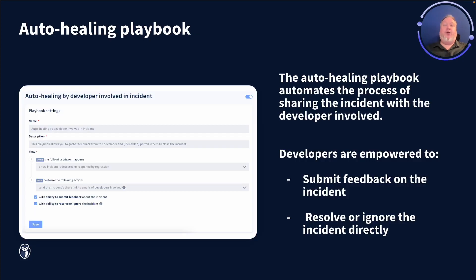The auto-healing playbook automates the process of sharing the incident with the developers involved. The developers are then empowered to submit their feedback — they're provided the correct links to review the incident, write their response, and include the nature of the secret involved and any other notes that can help close out the incident. The playbook also gives developers the ability to resolve and ignore incidents directly. For instance, if they've shared an example API key that doesn't actually go to anything, the developer can mark that as ignored, and it will resolve in the dashboard and record all of their appropriate feedback.